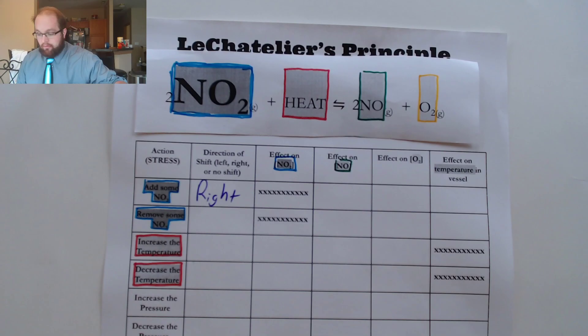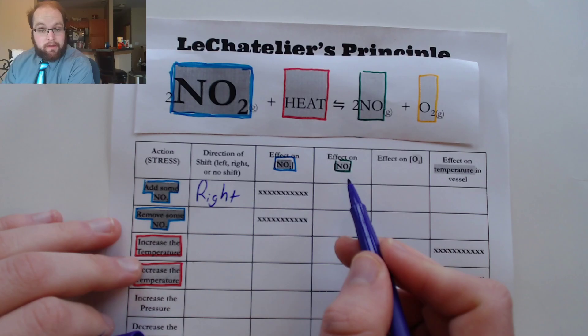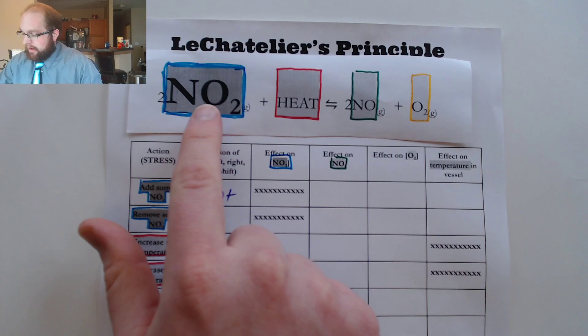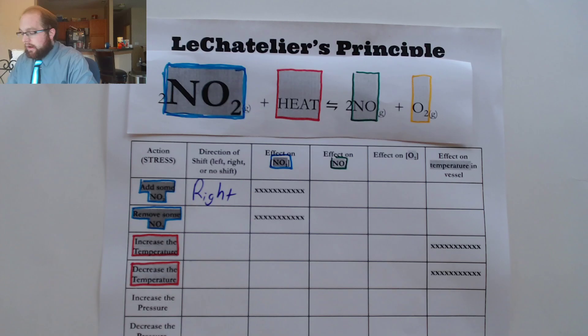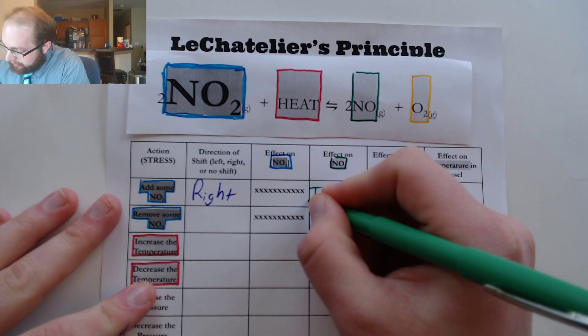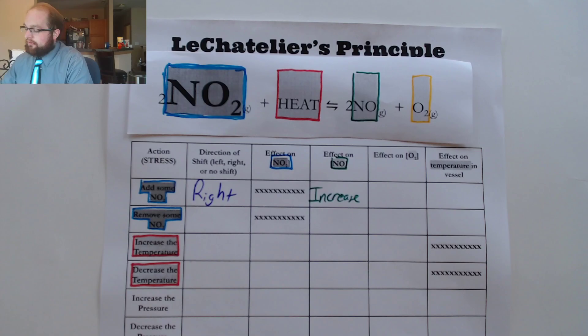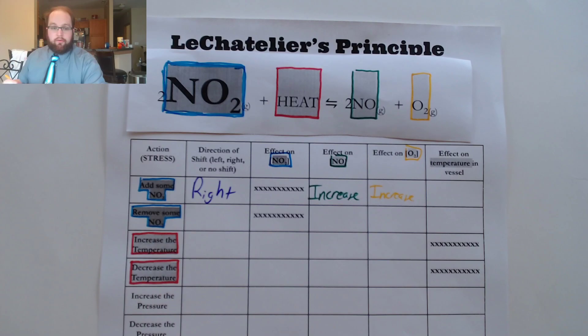Now the NO2 has some other effects. We want to describe the effects on the different parts of the reaction. Since we shifted to the right, that means we're going to be making more NO, because that's on the right side of the reaction — so NO is going to increase. And O2 is also on the right side, so by shifting to the right, we're also going to increase our amount of O2 as well.